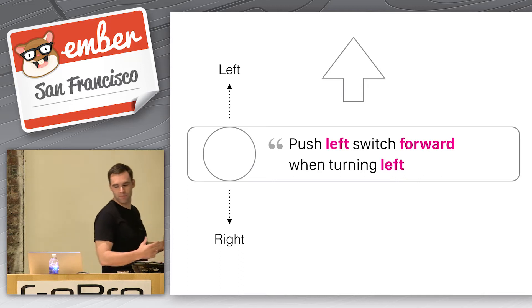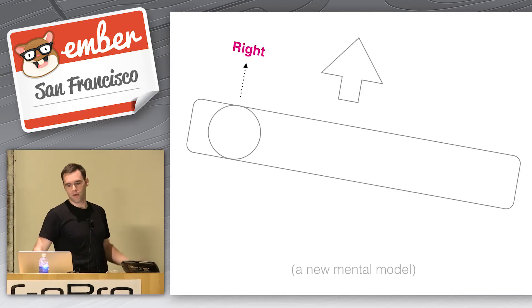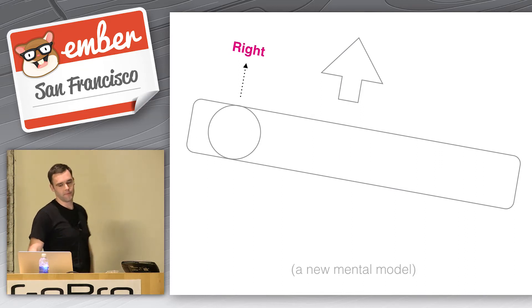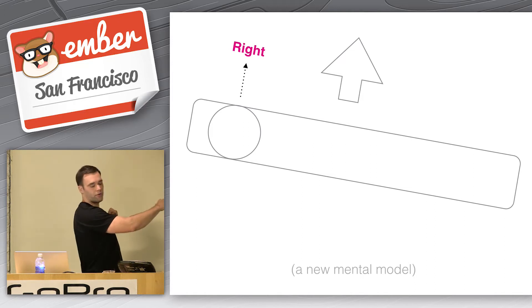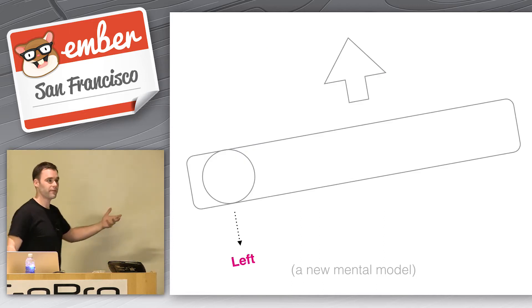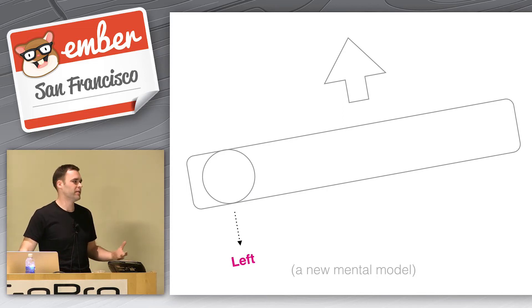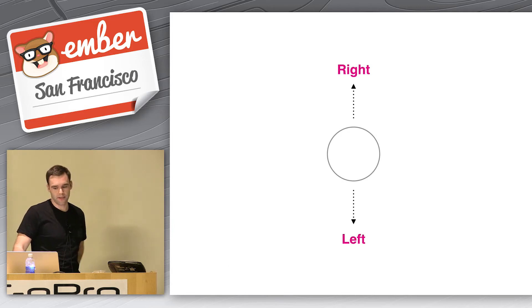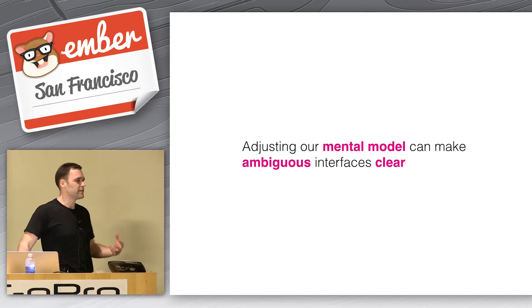Here's one possible mental model: we're on the left side of the stick, so let's push the left switch forward because we're going to go left. But that's actually not right. Here is the actual mental model from the Design of Everyday Things — the writer realized that if he's going to turn right, the handlebar on the left is going to go forward, so he'll flick that switch. Conversely, if he's going to turn left, you flick it left and then turn. Once you have this mental model, it's easy — it might feel obvious. The point here is that adjusting our mental model can make ambiguous interfaces a little more clear.